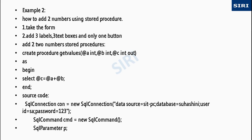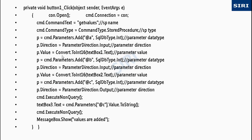Now let's see how to add two numbers using a stored procedure. We take a form and add labels, textboxes, and a button, then create a stored procedure named 'get_value' where the parameters are declared. We use the SQL statement, and in the source code we declare the parameters, add the parameter, set the IN direction, set the P value, convert and invert direction, and then declare the execution with ExecuteNonQuery. For more, visit us at www.cdkd.blogspot.com.